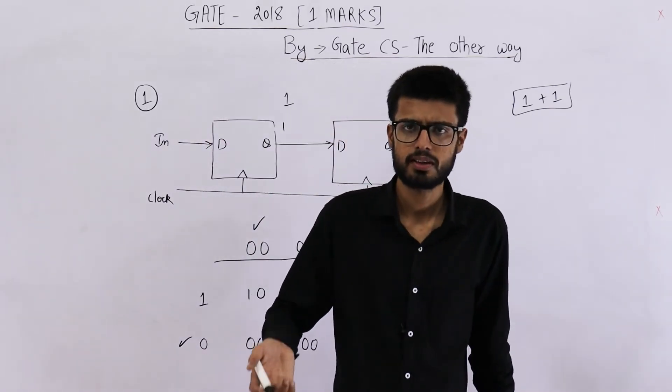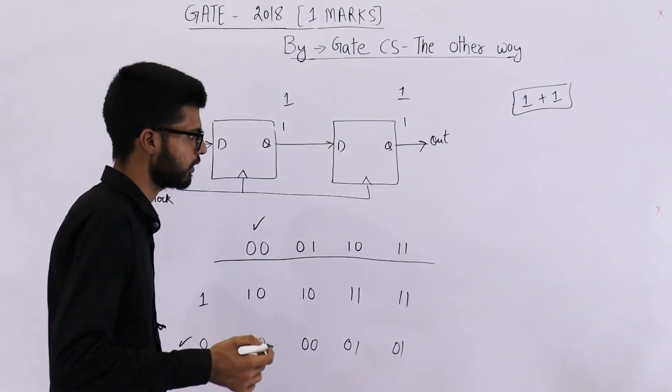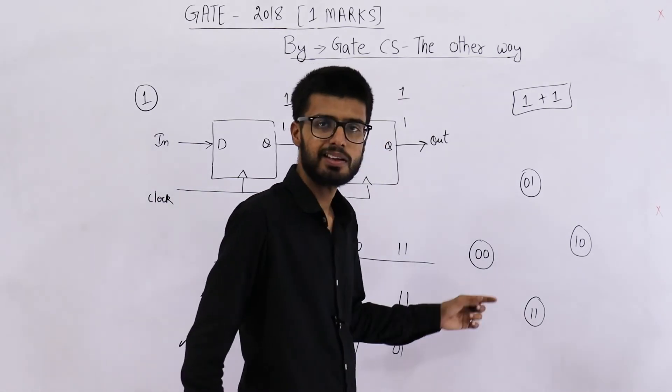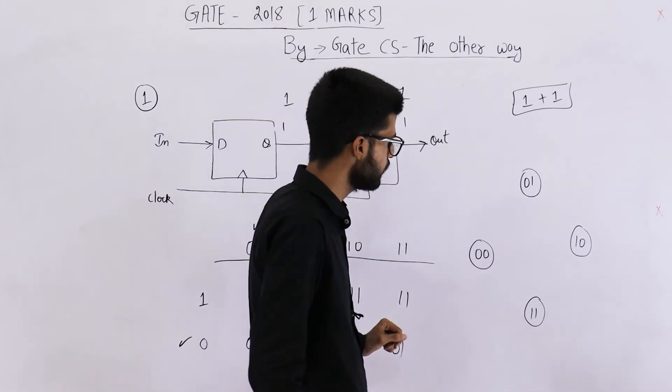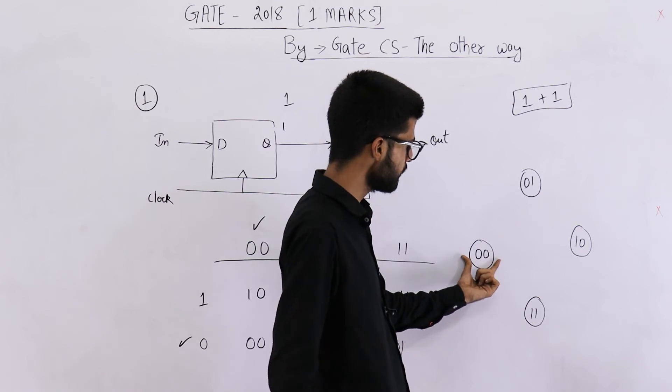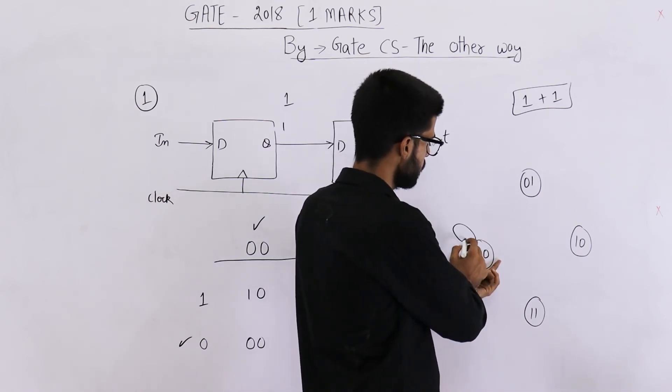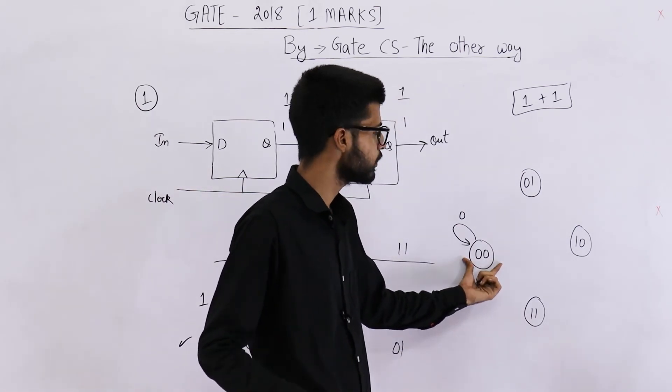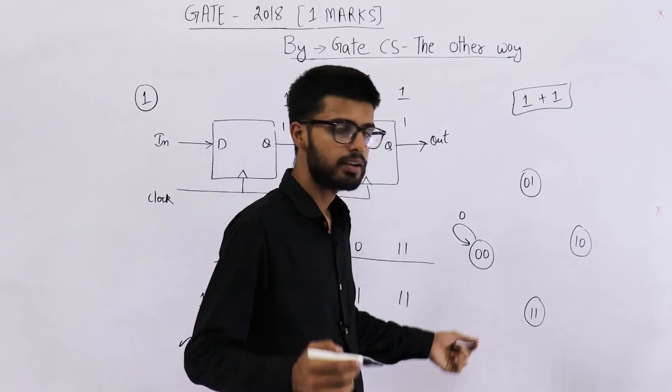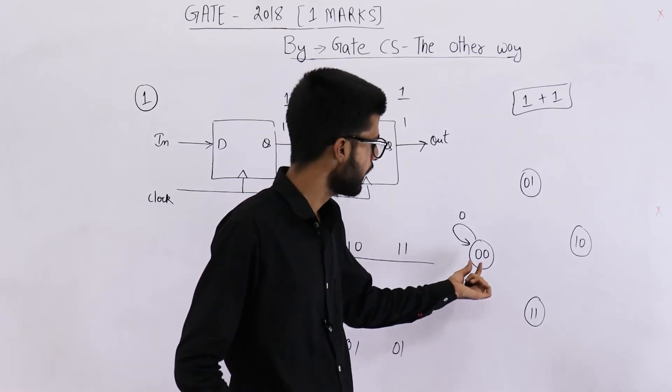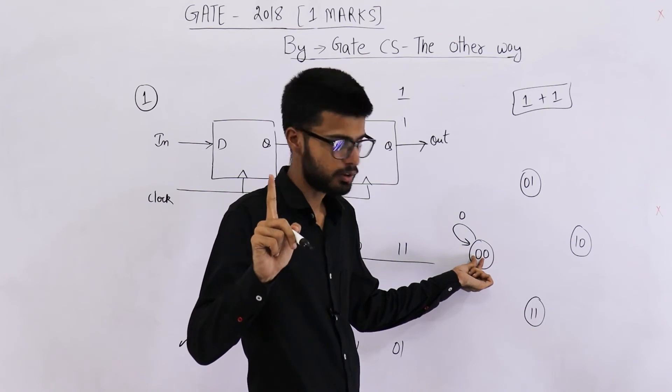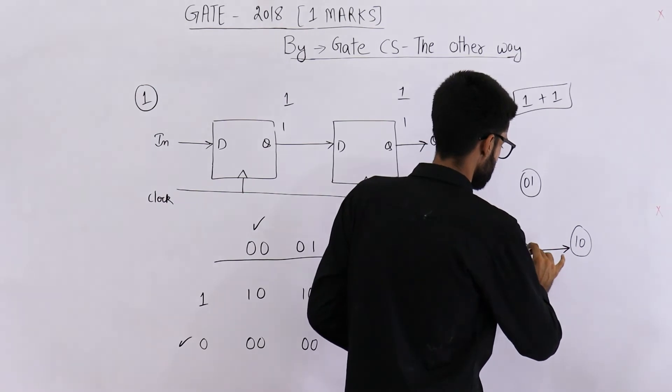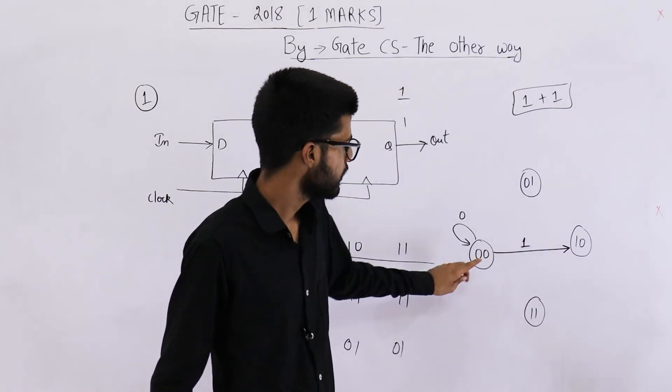Now if you want to see the state transition diagram, I'll just show that also. See, these are the four possible states. If value of in is 0, on this state will remain here only. If value of in is 1, new state will be 1, 0. So just take the value of in and the first bit. Value of in is 1, first bit is 0. So the next state is 1, 0. Like this. So this is 1.